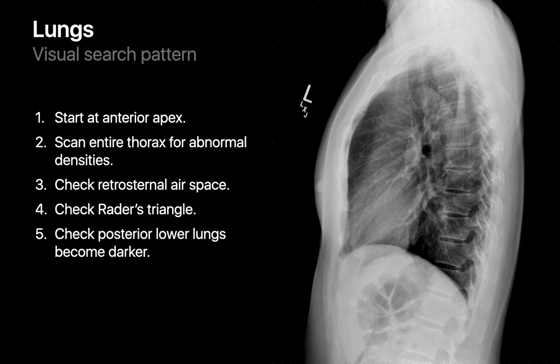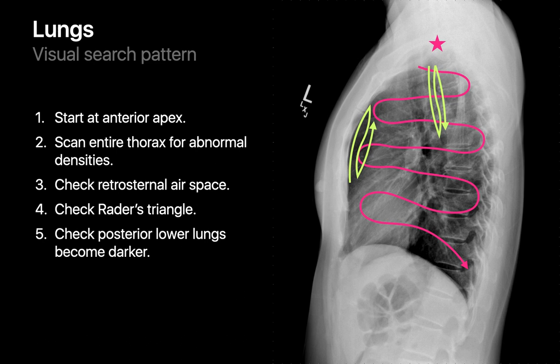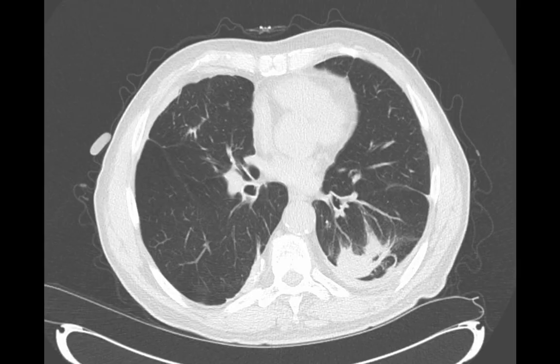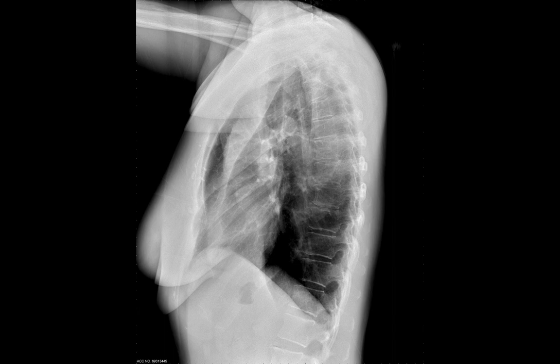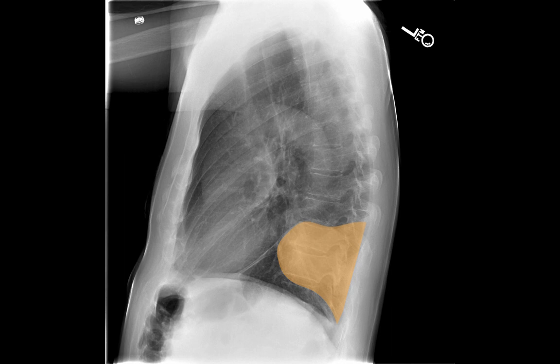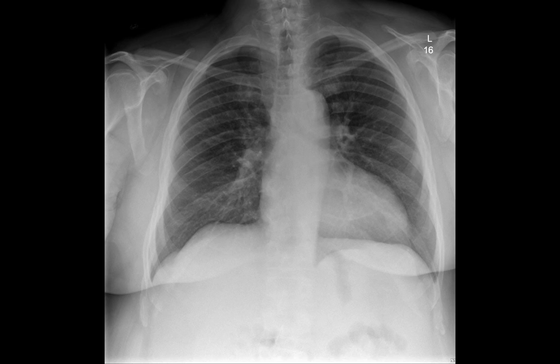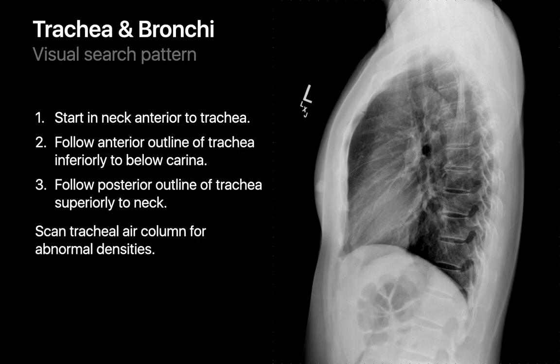The visual search then moves to the lungs, starting at the apex and scanning top to bottom, followed by a double-check of the three lucent regions: the retrosternal clear space, Raider's triangle, and the posterior lower lungs. You may find opacities where lucency is expected — posterior lower lobe opacity from round atelectasis, obstructive left upper lobar atelectasis from a central lung tumor, a lower lobe lung adenocarcinoma mass, or a solitary nodule obscured on the frontal image that proves to be a hematoma on CT.